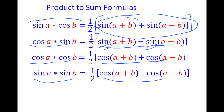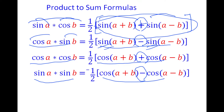The sign between the two functions on the right side follows a pattern: for sine×cosine it is plus, for cosine×sine it is minus, for cosine×cosine it is plus, and for sine×sine it is minus. So you can memorize the left-side combination and then remember the corresponding sign on the right side.